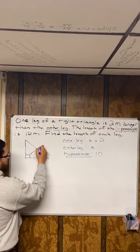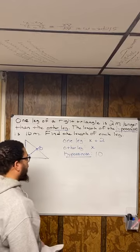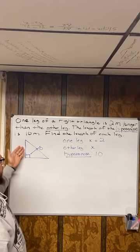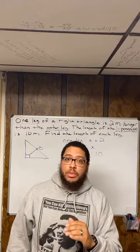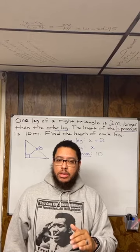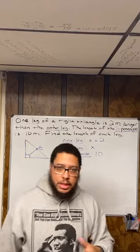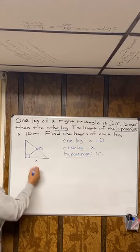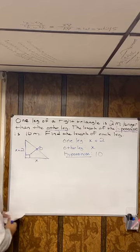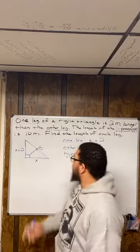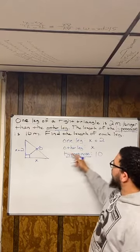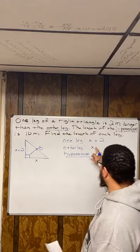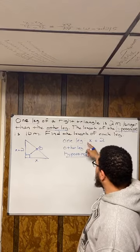So the hypotenuse is 10, so I can label that — write a 10 right there. Then I say, okay, I've got one leg and the other leg. You should be wondering which one is the one leg and which one is the other leg. But because we're dealing with a right triangle, it doesn't matter which is which. So I'm going to call this leg X — that'll be the other leg — and I'm going to call this leg X plus 2. Now we're trying to figure out what the length of each leg is. Once I find out what X is, I'll be able to know what X plus 2 is.